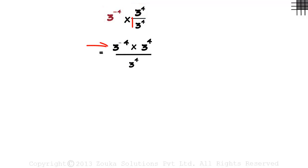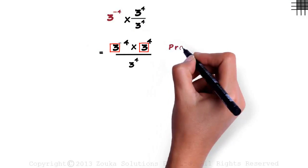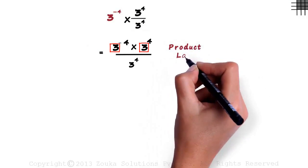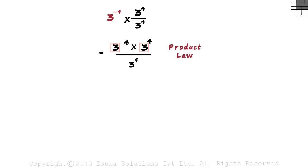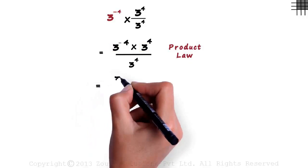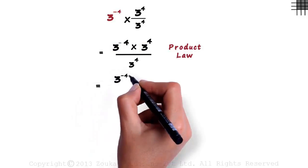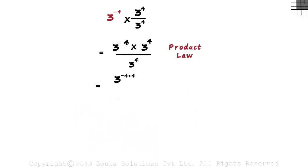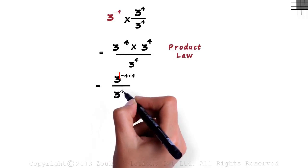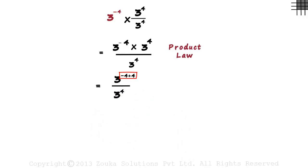Focus on the numerator now. Since the base is the same, we can use the product law to write it down as 3 raised to minus 4 plus 4. And we write the denominator as is. Minus 4 plus 4 equals 0.